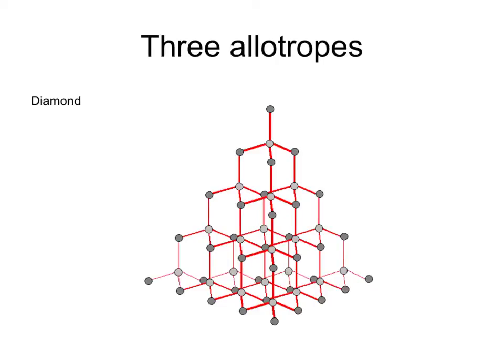Here's the structure of the first allotrope of carbon, which is diamond. In diamond, each of the carbon atoms, as you can see here, are joined to four other carbon atoms by strong covalent bonds.